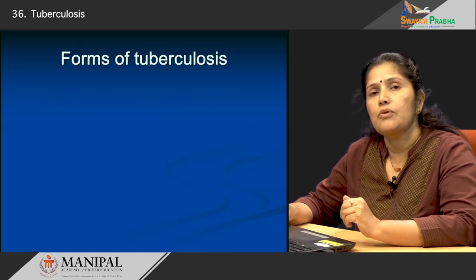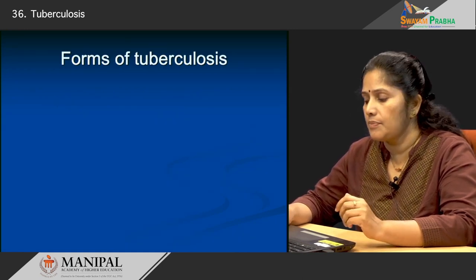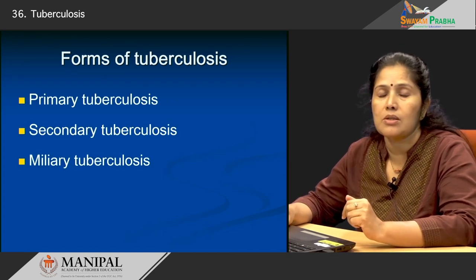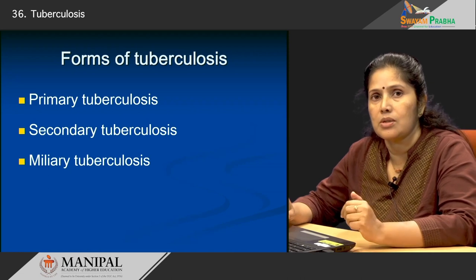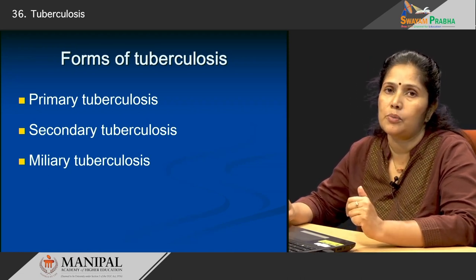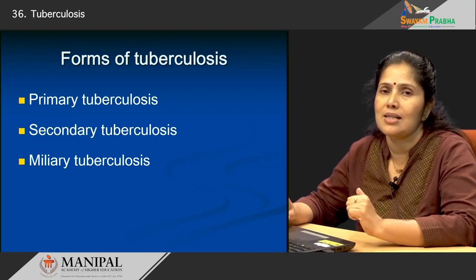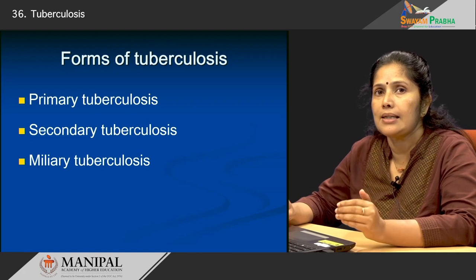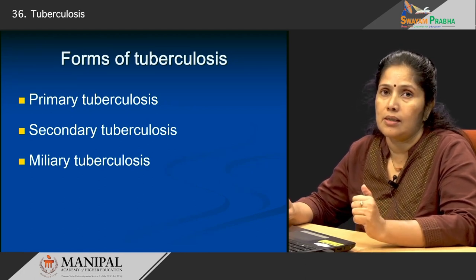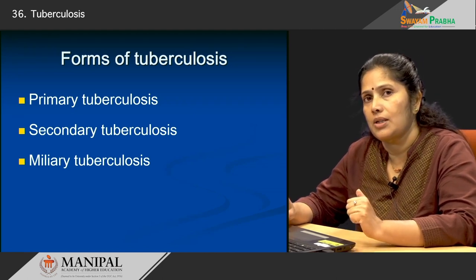Now let us look at the different forms of this disease. It presents in three different forms: primary tuberculosis, secondary tuberculosis, and miliary tuberculosis. We will look at each of these forms and also the morphological changes that occur in the lung, as well as the course of each disease.